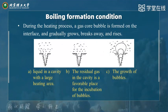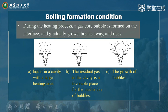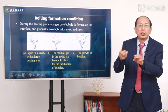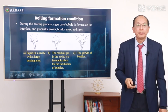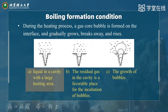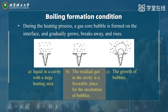Boiling formation conditions: during the heating process, the gas core bubble is formed on the interface, gradually grows, breaks away, and rises. Many gas bubbles are produced and rise. For example, liquid in a cavity with a large heated area makes it easy to produce the boiling process. The residual gas in the cavity is a favorable place for incubation and growth of bubbles.